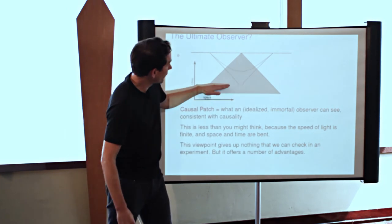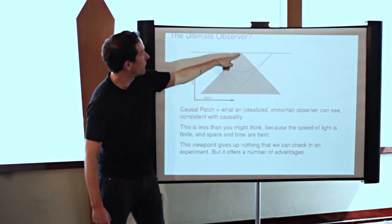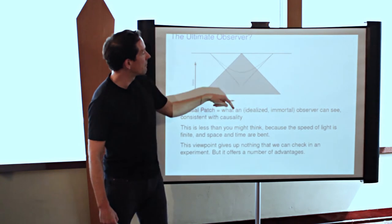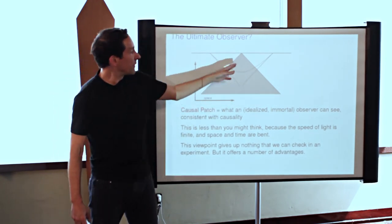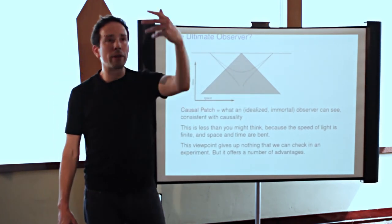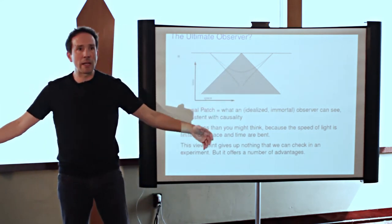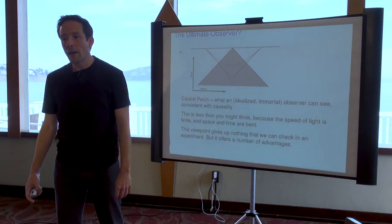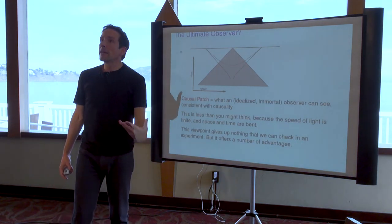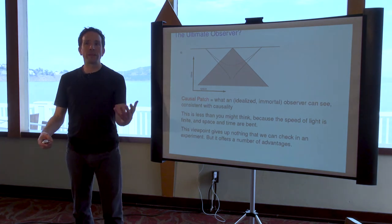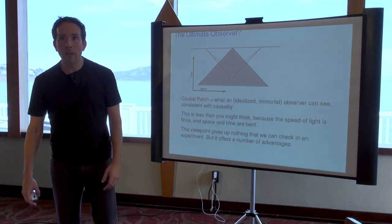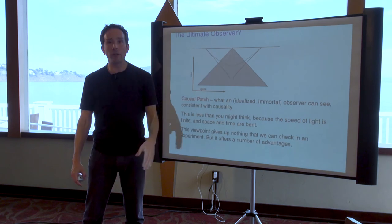That's this shaded region here. I'm making time go up and space go sideways and light can travel only as fast as 45 degrees in this particular way of drawing things. It can't go, for example, this fast. So I can't see what's happening here if I'm this observer because it never reaches me. Now this still sounds silly. If I give myself an infinite amount of time, you might think I can see infinitely far eventually.